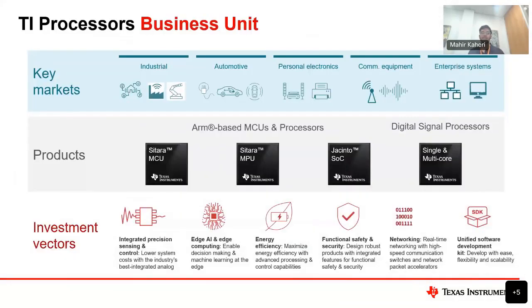We wanted to start with an introduction of what AM62x is in our TI processor business unit. The TI processor business unit is split into three different product lines: Sitara MCU, Sitara MPU, and Jacinto. These product lines are divided between ARM-based processors and MPUs, and also our digital signal processors. These pertain to key markets such as industrial, automotive, personal electronics, communication equipment, and enterprise systems.